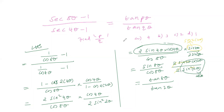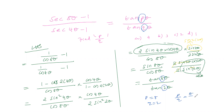Comparing with the right-hand side, tan pθ / tan qθ, we get p = 8 and q = 2. Therefore p/q = 8/2 = 4. The answer is 4, so the first option is correct.